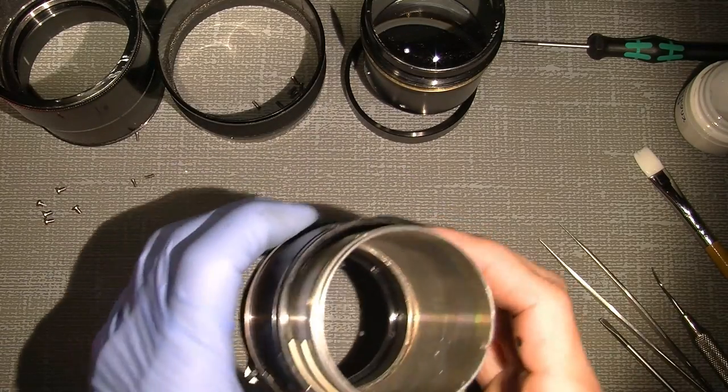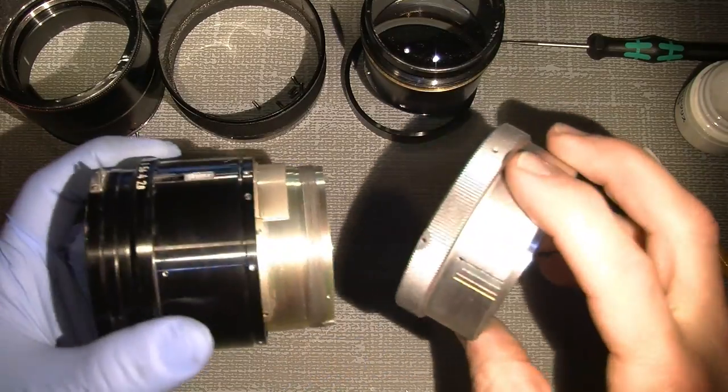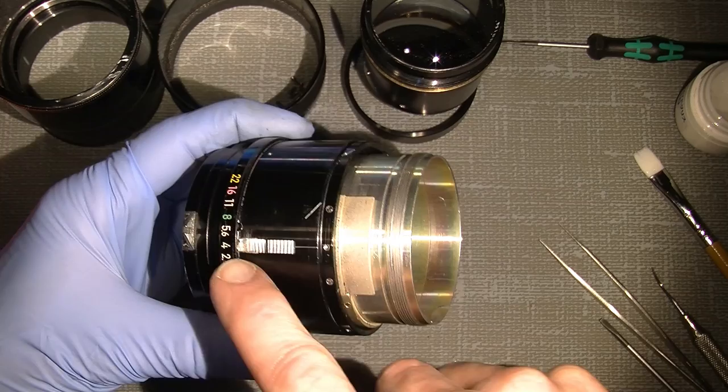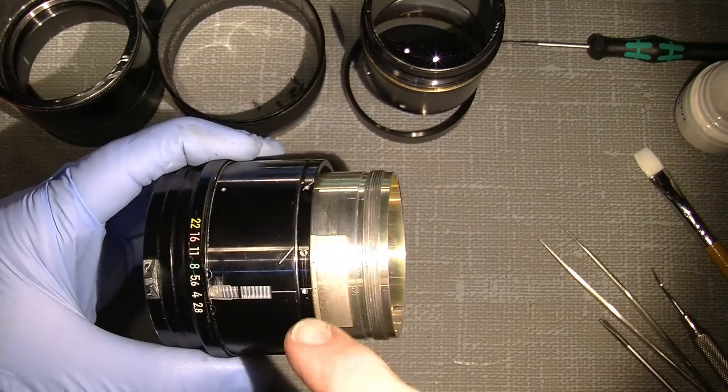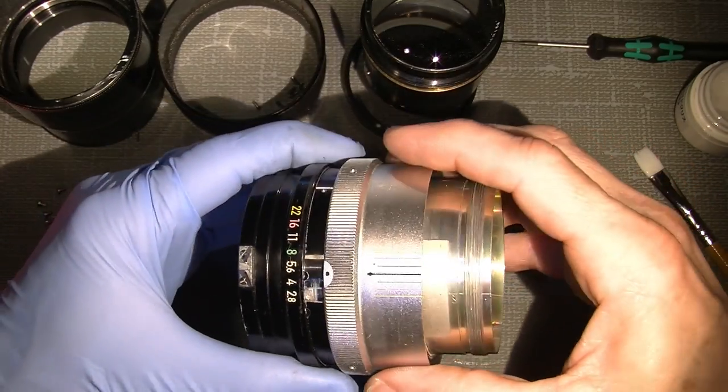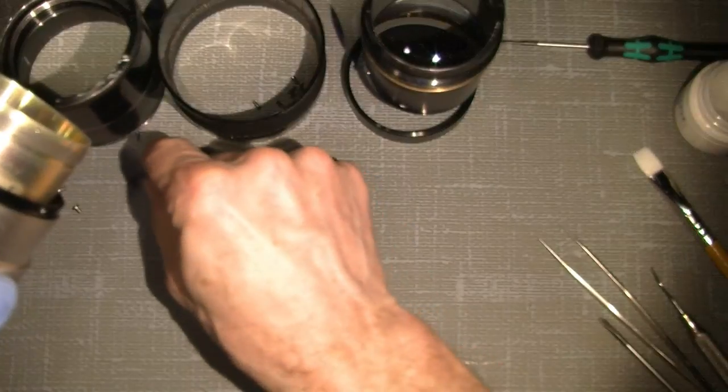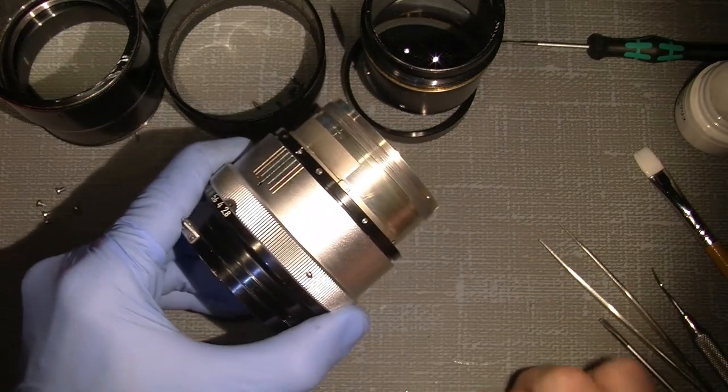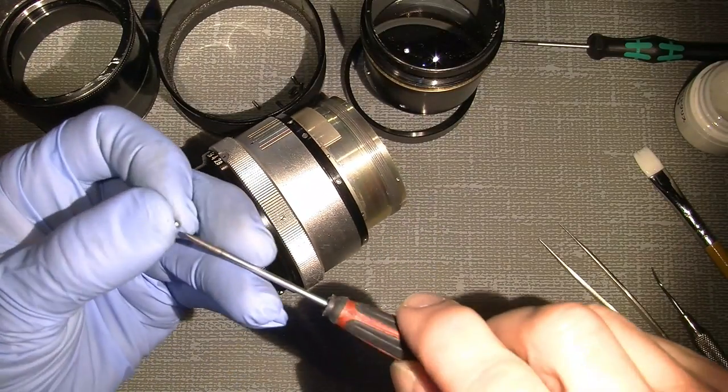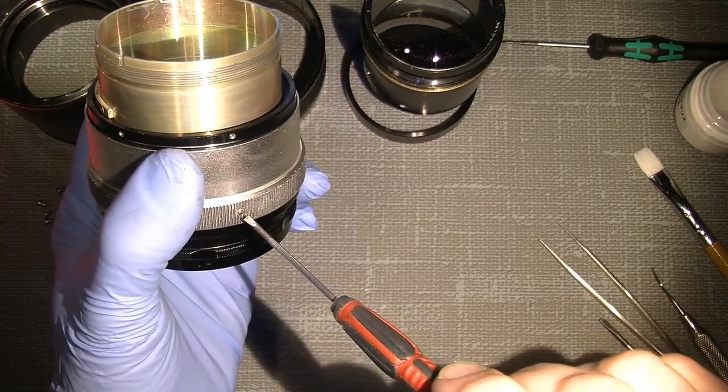Now the more tricky part comes now because I will put in the silver ring here and it can only sit one way. The mark here and my mark here and of course the mark for the aperture number. So I just put it over, find the screw holes, and then add the small screws. Nothing special about that.